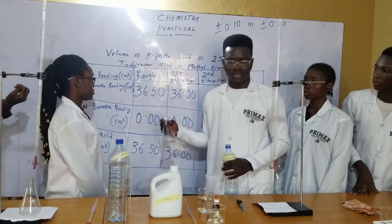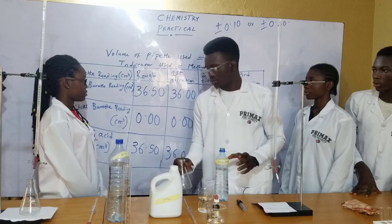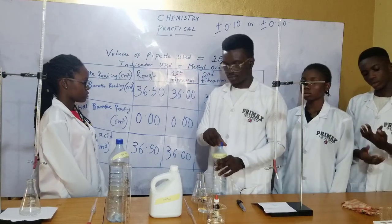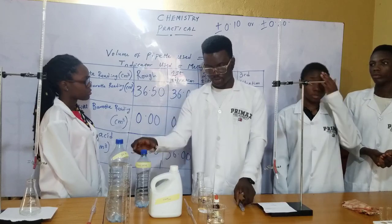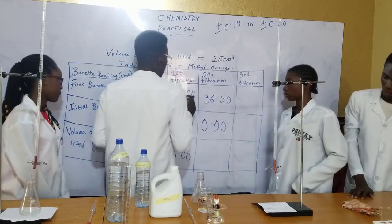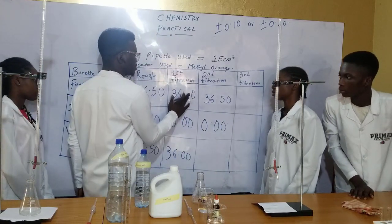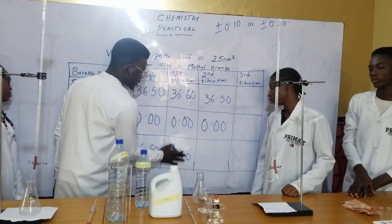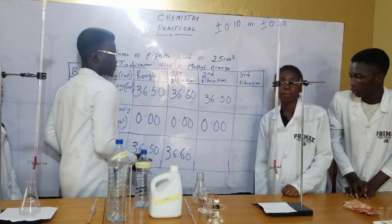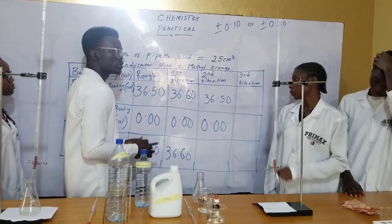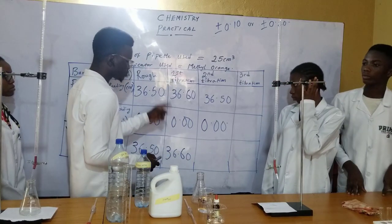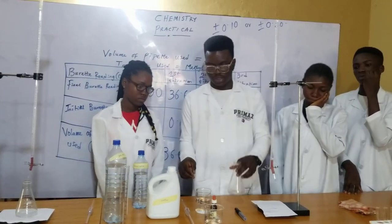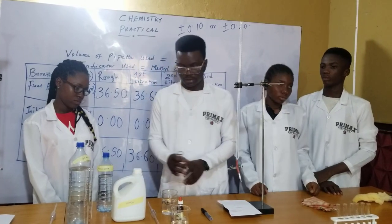The second titration reading — was it 36.0 or 36.6? It was 36.6. Please pay attention: the difference between readings is only about 0.1. That first reading was 36.6, not 36.0. So 36.6, and we now have the second reading. Then we introduce our base again for the final titration.